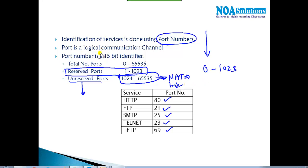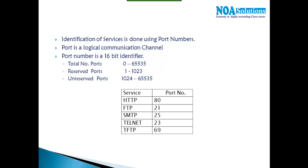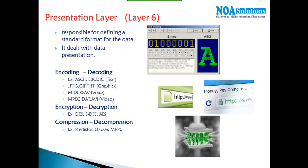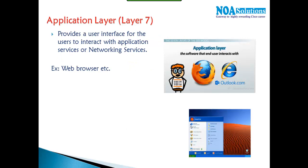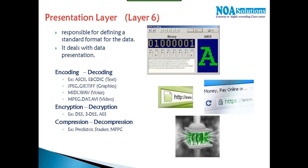Port numbers are simply a logical communication channel that identifies a specific service. When information is carried, a specific port number is written into it. The Application layer provides the interface to connect, but the actual sending is handled by the next layer.